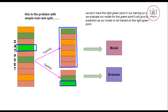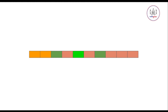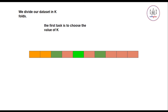When we evaluate our model for the light green data points, it will give us false predictions because our model was not trained on them. To come to the rescue for this problem with simple train and test split is k-fold cross validation. Here we have our dataset and we divide it into k folds, that is k groups. You can give any value for k — the first task is to choose the value of k.